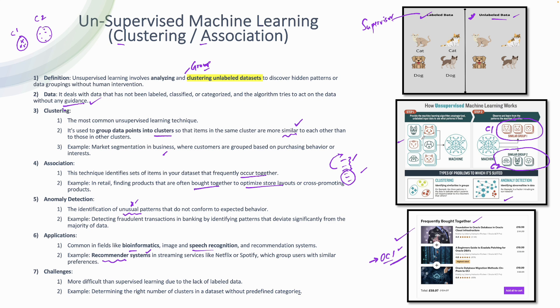These are the kinds of challenges data scientists have to work on. With this we come to the end of unsupervised machine learning, which has two main types: clustering and association. Thanks for watching.